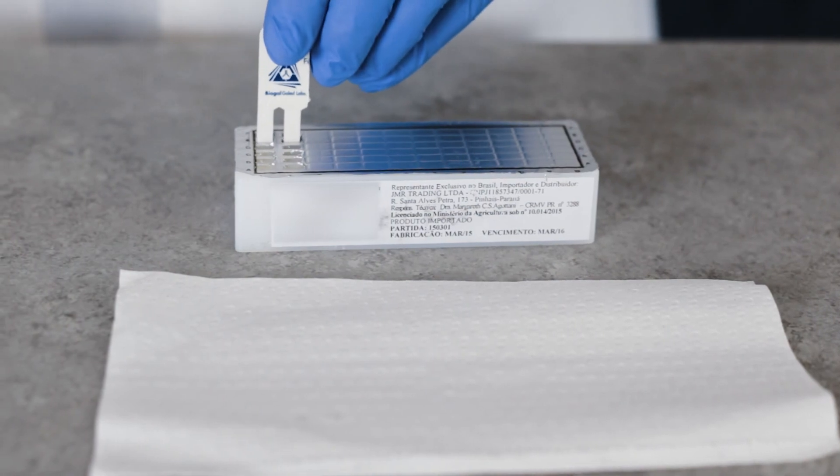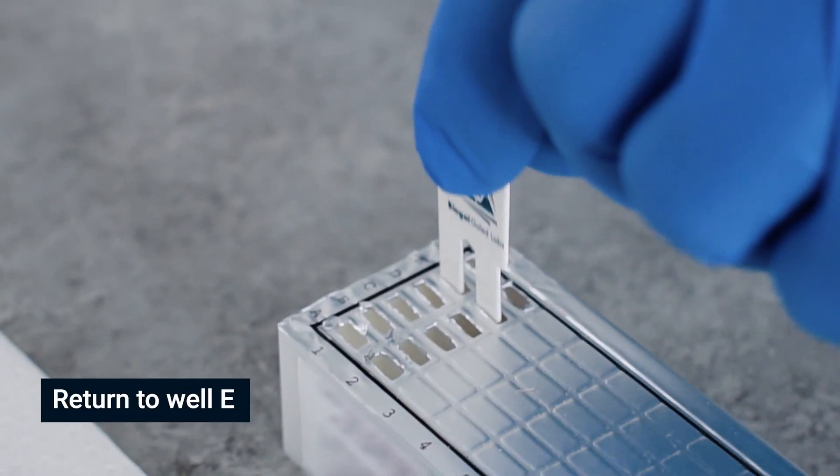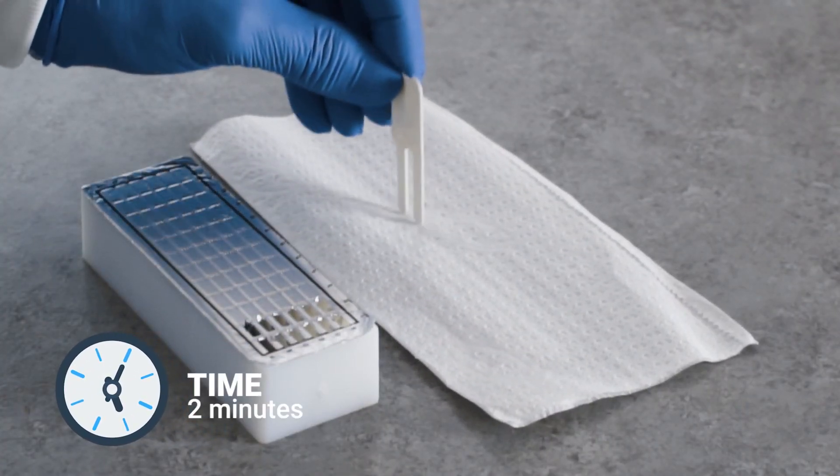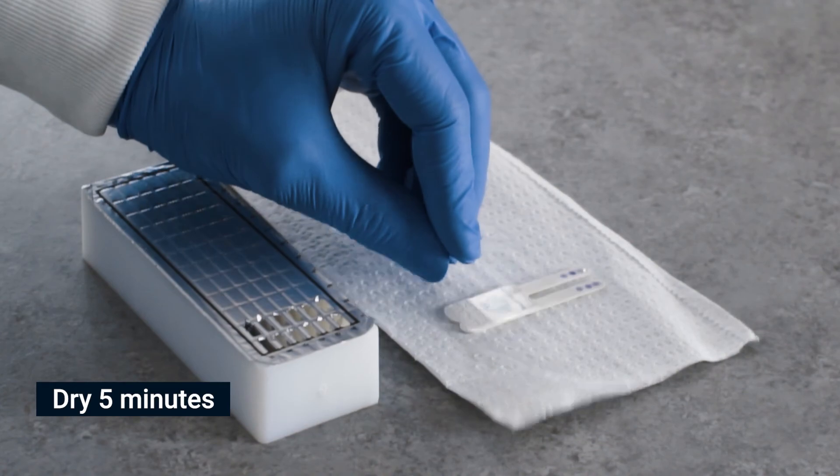After piercing the foil for color development in row F, move the comb back to row E for 2 minutes for color fixation. Take the comb out and let it dry for 5 minutes before reading the results.